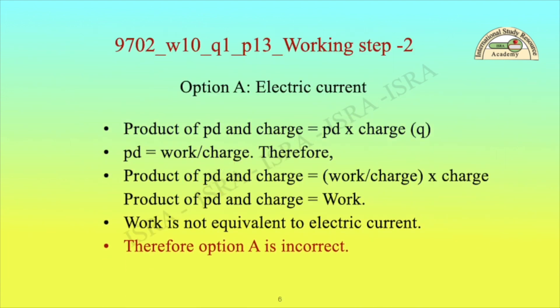Working step 2 — Option A, electric current: The product of PD and charge equals PD × Q. Since PD equals work divided by charge, the product of PD and charge equals work divided by charge, times charge. The charge cancels from numerator and denominator, giving work. Work is not equivalent to electric current, therefore option A is incorrect.